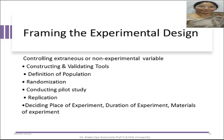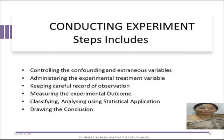The next phase is randomization, by which the researcher selects samples giving equal opportunity to each sample to be placed in the experimental group and the control group to be treated with the experimental factor. Next is conducting the pilot study as well as replication — conducting some experiments to decide the place of experiments, duration of experiments, and the materials required for conducting the experiment.